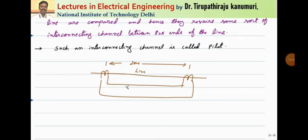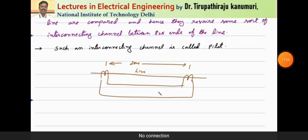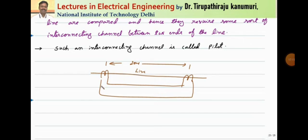That is why we cannot use the wire scheme for more than 30 kilometers, because the cost is more and the effects of capacitance and resistance are dominating. Above that, we have to go for some wireless transmission schemes.